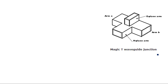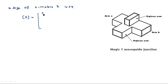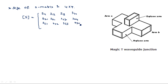The size of the scattering matrix is 4 by 4. So we can say S is equal to: S11, S12, S13, S14; S21, S22, S23, S24; S31, S32, S33, S34; S41, S42, S43, S44.